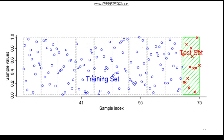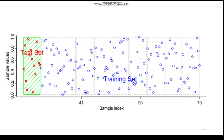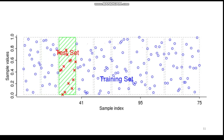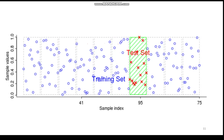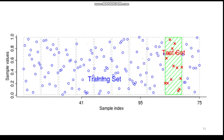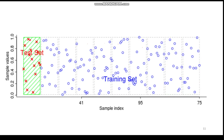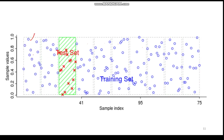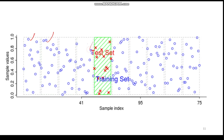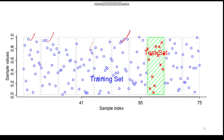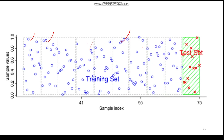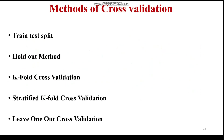We have separated the data into folds - say one through ten. In these ten parts of data, we keep on shifting the training set and test set. Initially, fold one is the test set and the remaining folds are training. Then fold one is training and fold two is test. Similarly fold three is test and the remaining folds are training data. This is what is actually happening in cross-validation.